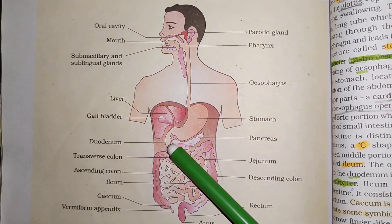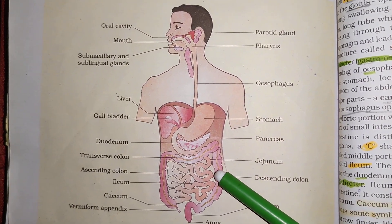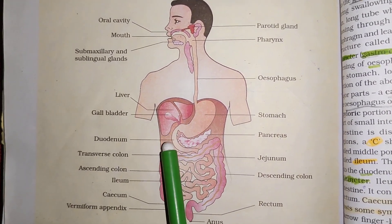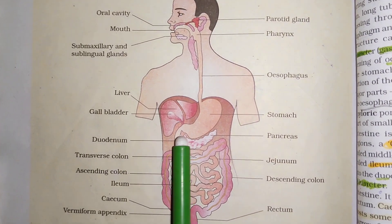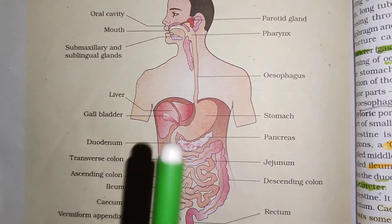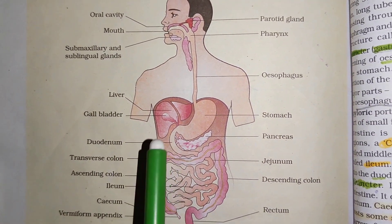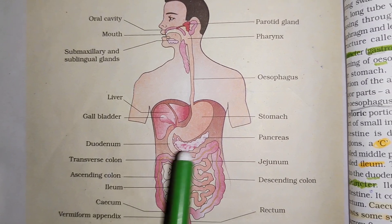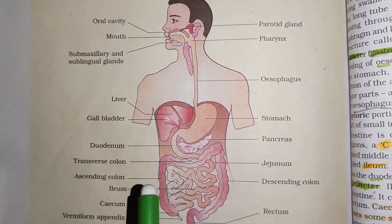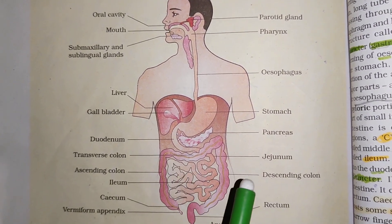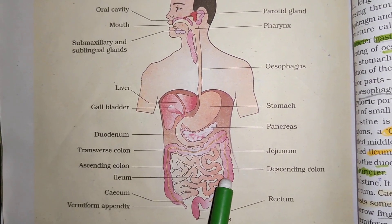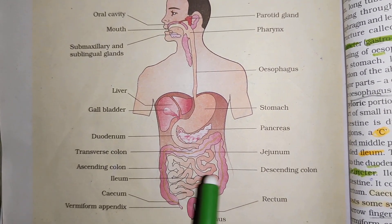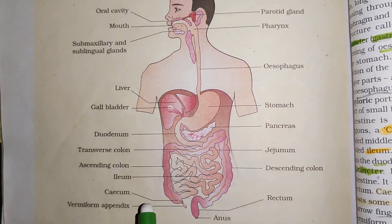From the stomach we reach the small intestine. The stomach opens into the small intestine at the duodenum, which is the starting part of the small intestine. From the duodenum, it continues to the jejunum and then the ileum.